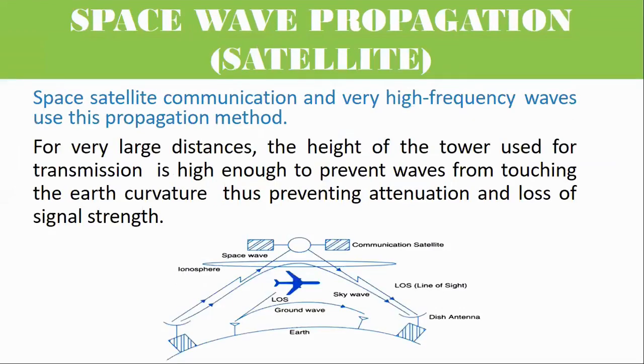Space satellite communication and very high-frequency waves use space wave propagation method. For very large distances, the height of the tower used for transmission is high enough to prevent waves from touching the Earth curvature, thus preventing attenuation and loss of signal strength.